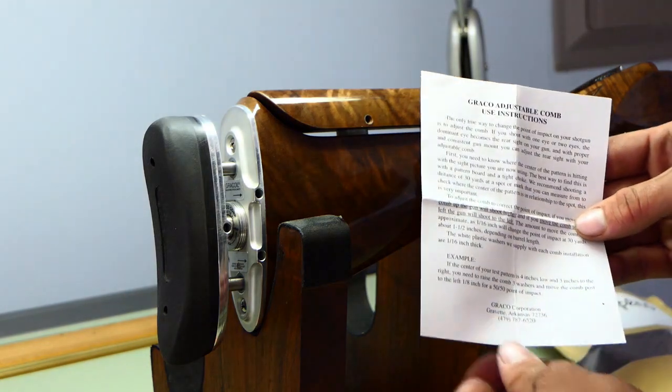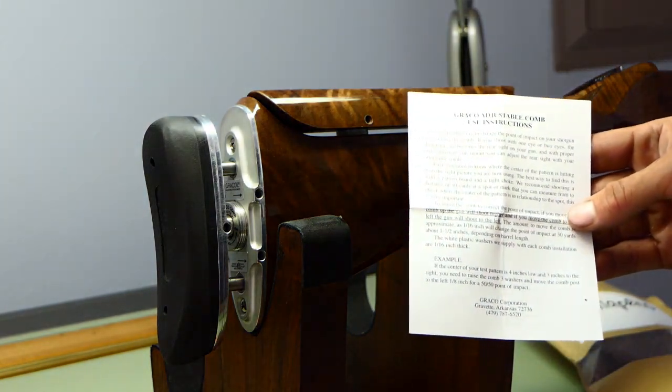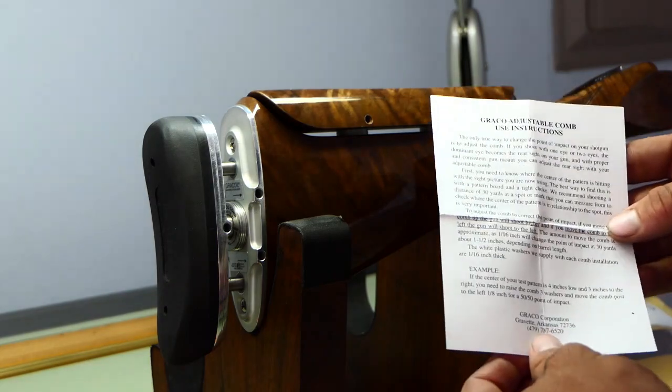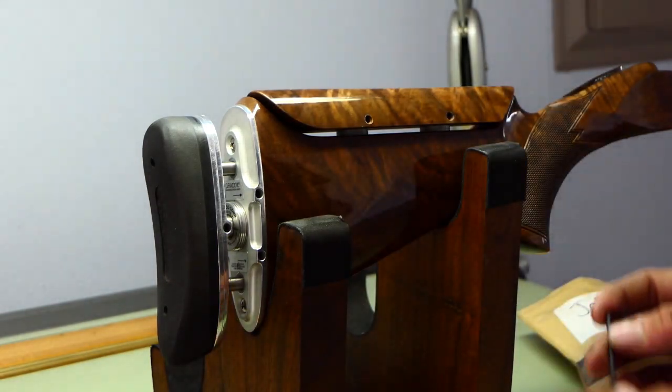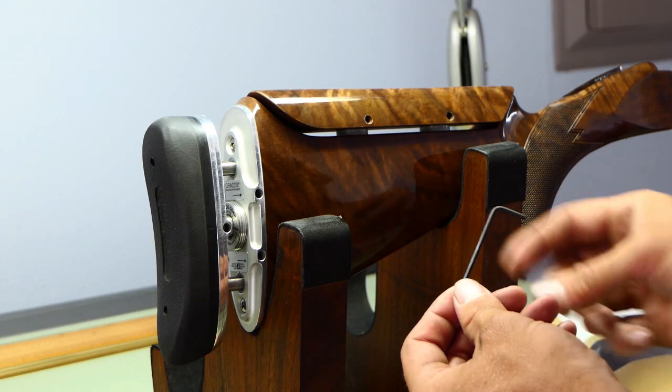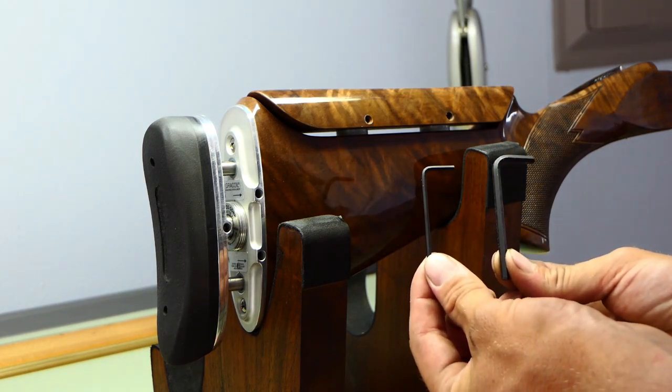Today we're going to be adjusting a Graco adjustable comb. Here I have the instruction sheet. Beyond the instruction sheet I have a 3/32nd Allen wrench and I have a 5/32nd Allen wrench.